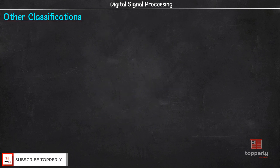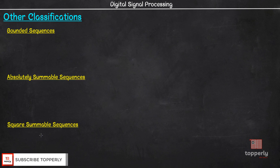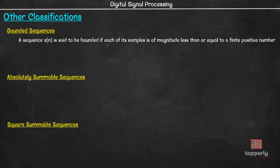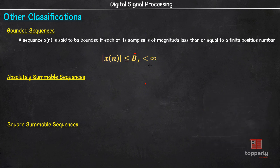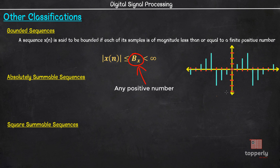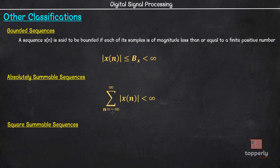Another way to classify signals is based on whether they are bounded, absolutely summable, or square summable. A sequence x(n) is bounded if each sample has magnitude less than or equal to a finite positive number B_x, i.e., |x(n)| ≤ B_x < ∞. For example, the periodic sequence shown is bounded with B_x = 3. A sequence is absolutely summable if Σ|x(n)| from n = -∞ to ∞ is less than infinity. A sequence is square summable if Σ|x(n)|² from n = -∞ to ∞ is less than infinity.